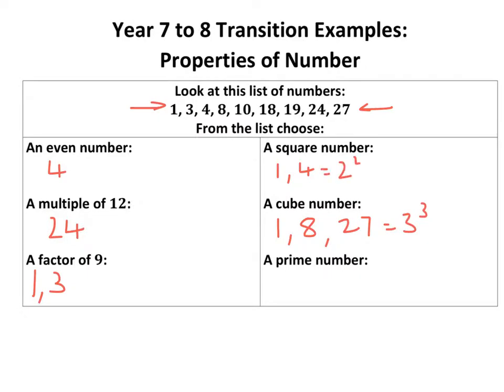A prime number is a number that only divides by one and itself. It only has two factors. Because it's going to have two factors, one is not a prime number. The only one in that list is 19, because all the others are in other values' times tables. Just be a little bit careful there. You know all those, but just be a tiny bit careful.